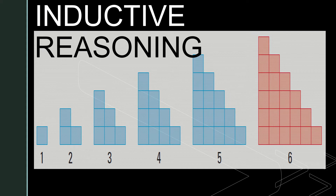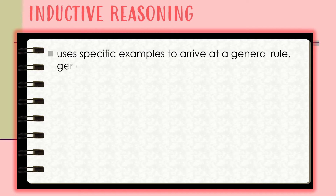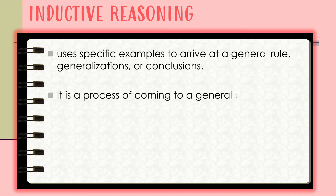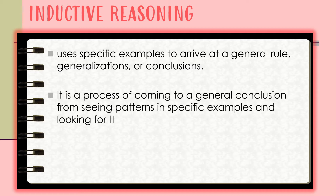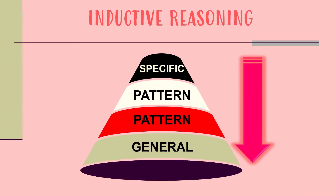Inductive reasoning uses specific examples to arrive at a general rule, generalizations, or conclusions. It is a process of coming to a general conclusion from seeing patterns in specific examples and looking for the regularity in those patterns. Note that inductive reasoning is from specific to general, and there is a specific pattern that will lead us to the general rule.